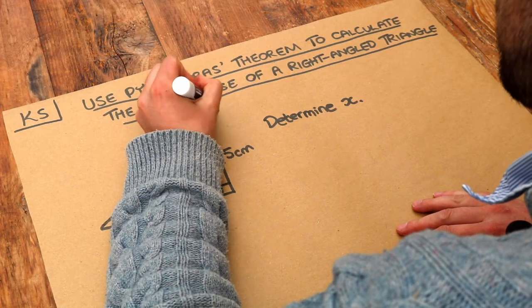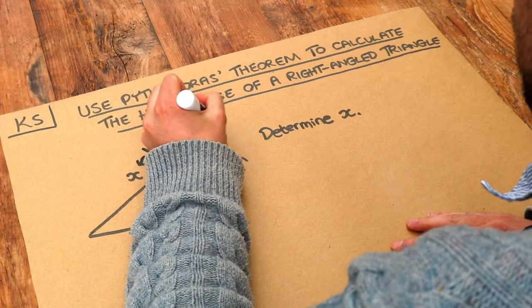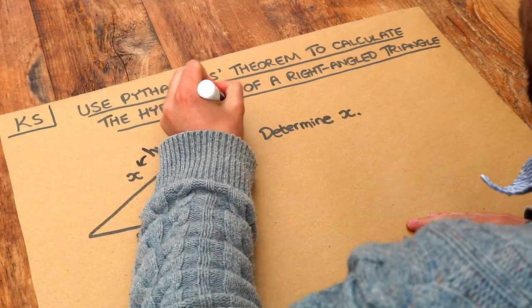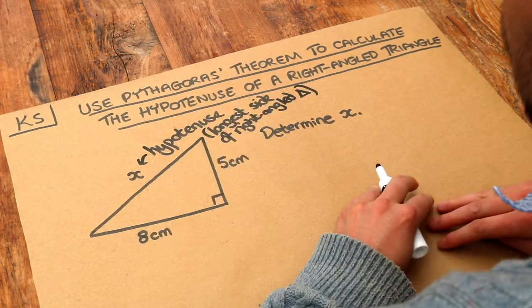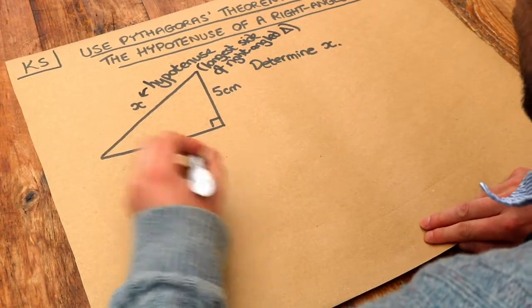Probably one of the most misspelled words in mathematics. So that's the longest side of a right angle triangle. So how do we find this side here? Well we use something called Pythagoras theorem and Pythagoras theorem is this.